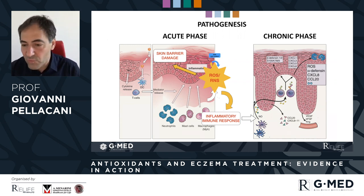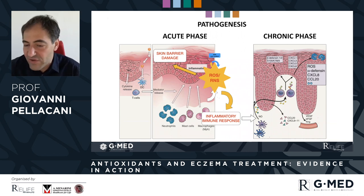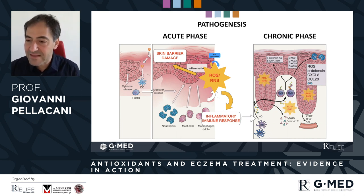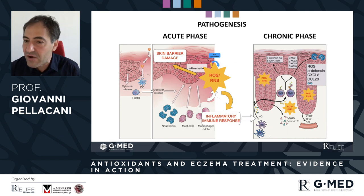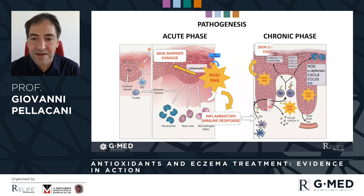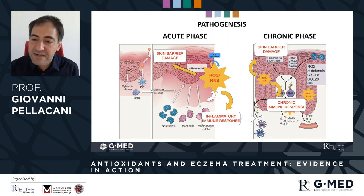This involves recruitment of T cells and other cells, while also keeping a continuous, persistent oxidative status inside the skin and epidermis. This is responsible for the anatomical changes — the thickening and hyperplasia of the epidermis — and is also very important in the generation of pruritus. This chronic oxidative process is again responsible for alteration of the barrier and the chronic immune response, along with the symptoms of eczema.